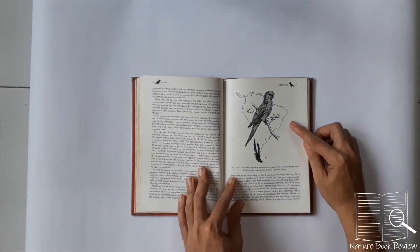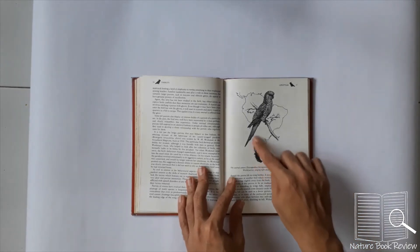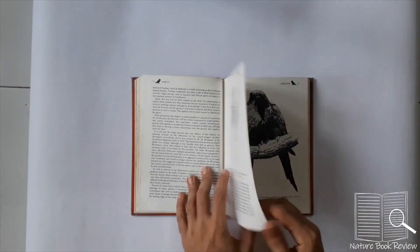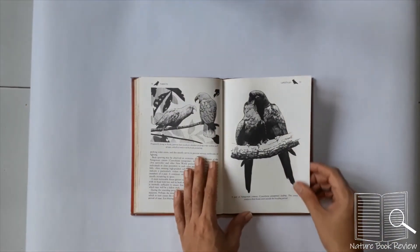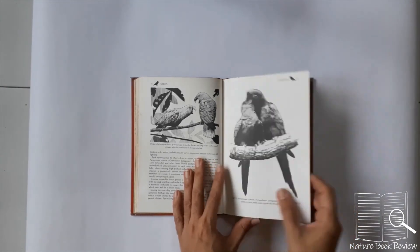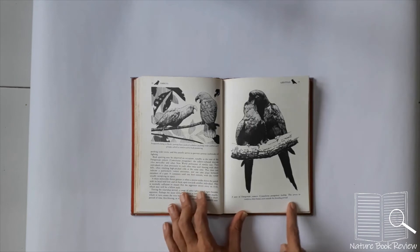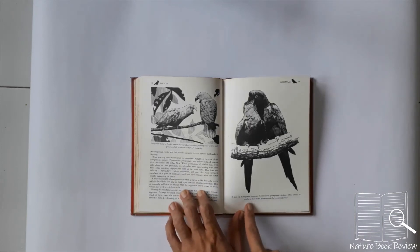So this is the austral conure. It is found further south than any of the new world parrots. You can see it is found in the southern part of South America - Chile and Argentina. A pair of Patagonian conures feeding. This serves to reinforce their bond even outside their breeding period.